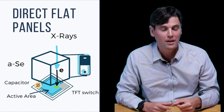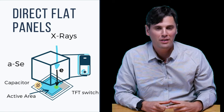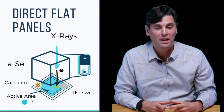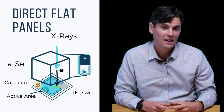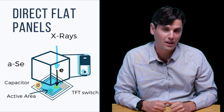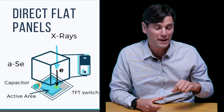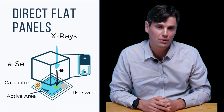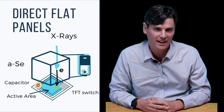In direct flat panels, compared with indirect panels, we skip the step of having a silicon photodiode because the electrons are measured directly. Those electrons are measured within the active area of the TFT array, charge is stored in a capacitor for each detector element, and the gate or switch is used to address and read out each detector element.